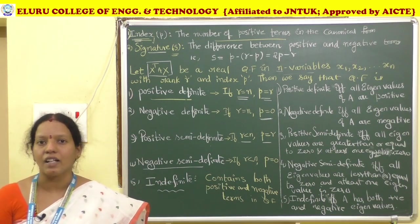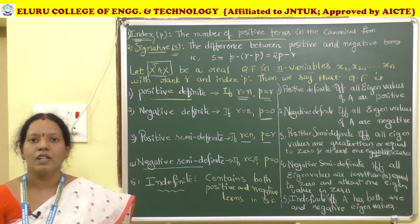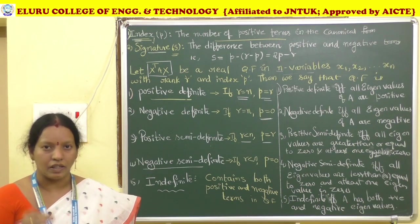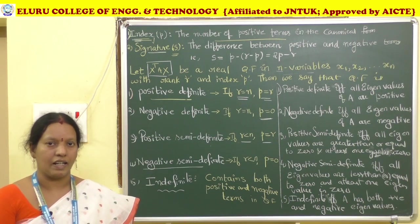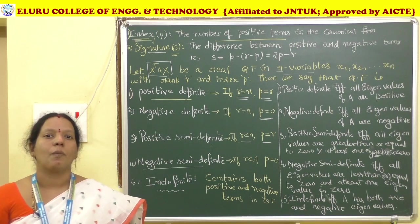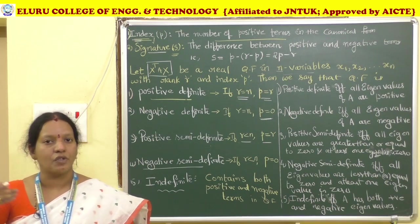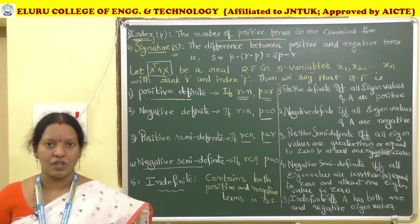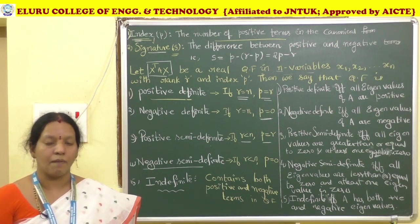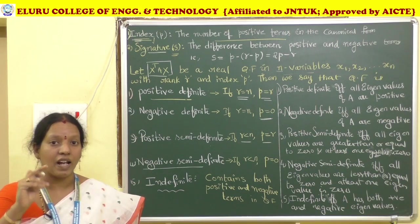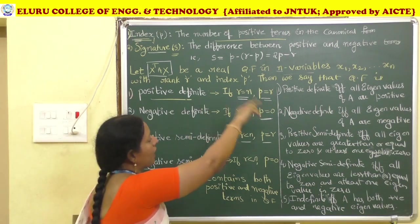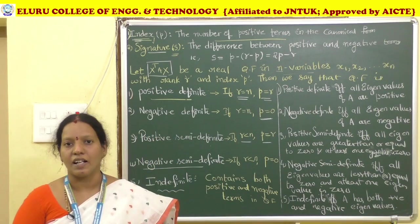If you use eigenvalues to determine the nature, you need to find the characteristic equation and compute the eigenvalues from it. Based on the eigenvalues, you define the nature of the quadratic form.